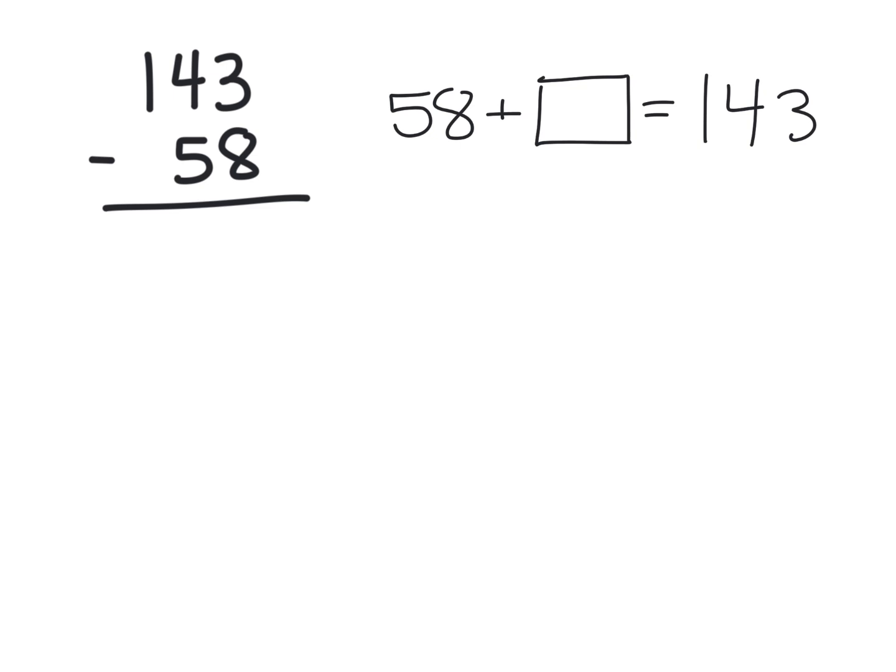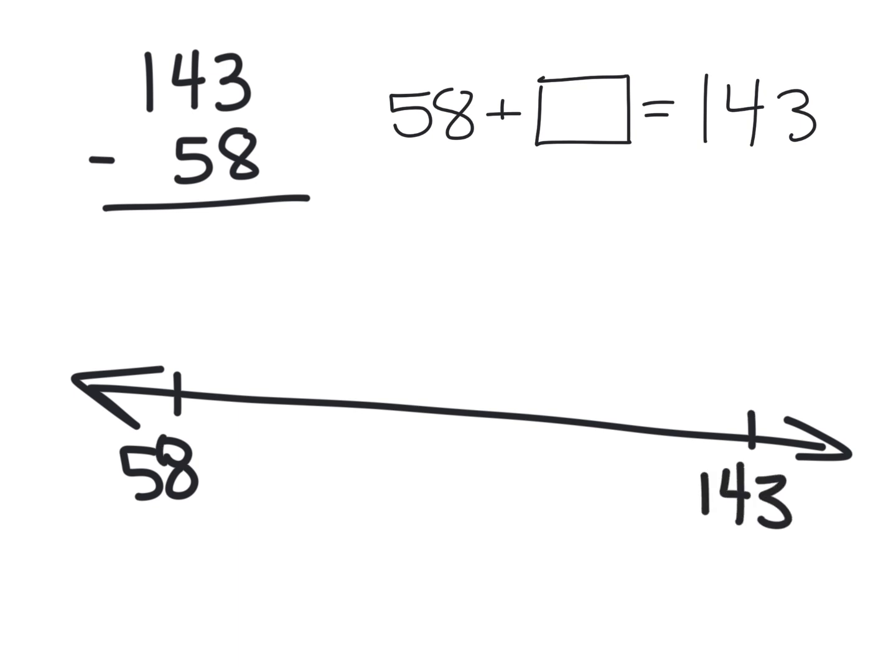And now what we're going to do is we're going to use a number line, an empty number line is what they call it, to record our thinking. So we're going to start on that empty number line with 58 way down to the left and 143 way over on the right.